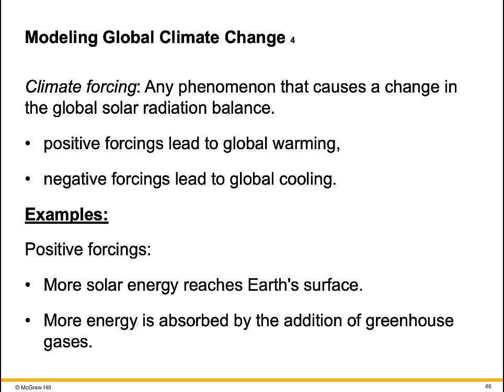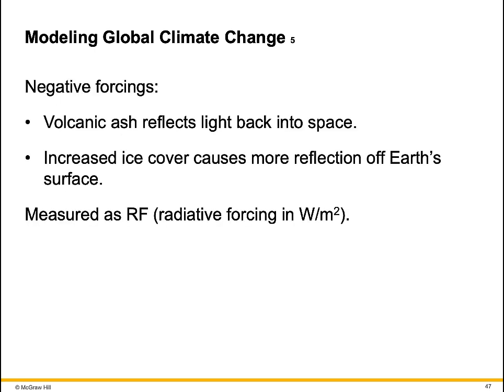Positive forcings lead to global warming; negative forcings lead to global cooling. Examples of positive forcings: more solar energy reaches Earth's surface, and more energy is absorbed by the addition of greenhouse gases. Examples of negative forcings: volcanic ash reflects light back into space, and increased ice cover causes more reflection off Earth's surface. These are measured as radiative forcings.